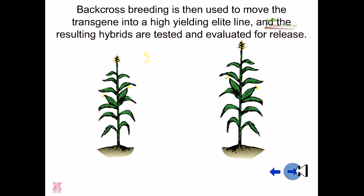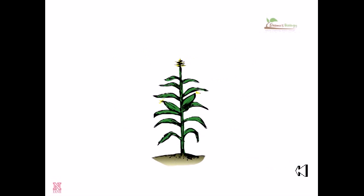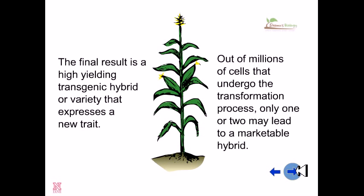Backcross breeding is then used to move the transgene into the high-yielding elite line, and the resulting hybrids are tested and evaluated for release. The final result is a high-yielding transgenic hybrid or variety that expresses a new trait.